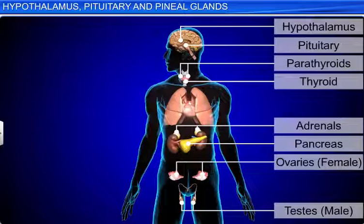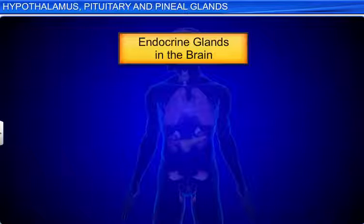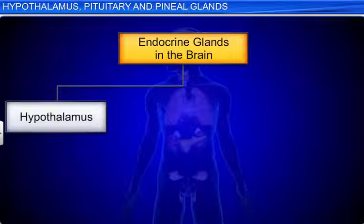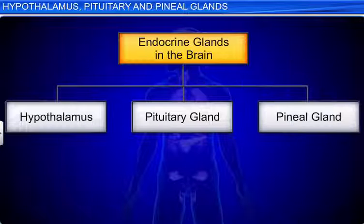The human endocrine system is composed of several endocrine glands in different parts of the body. The three endocrine glands in the brain are the hypothalamus, pituitary, and pineal glands.